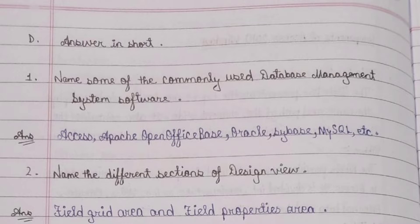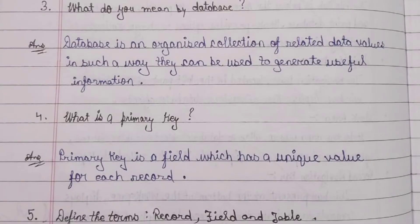Answer: Field grid area and field properties area. Question 3: What do you mean by database? Answer: Database is an organized collection of related data values in such a way they can be used to generate useful information. Question 4: What is a primary key? Answer: Primary key is a field which has a unique value for each record.